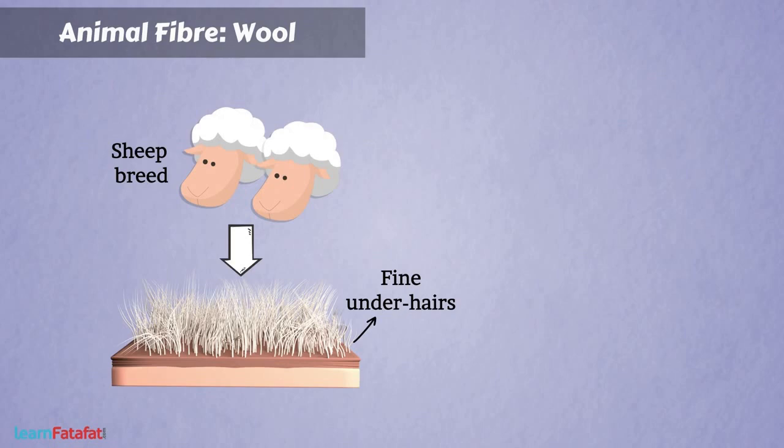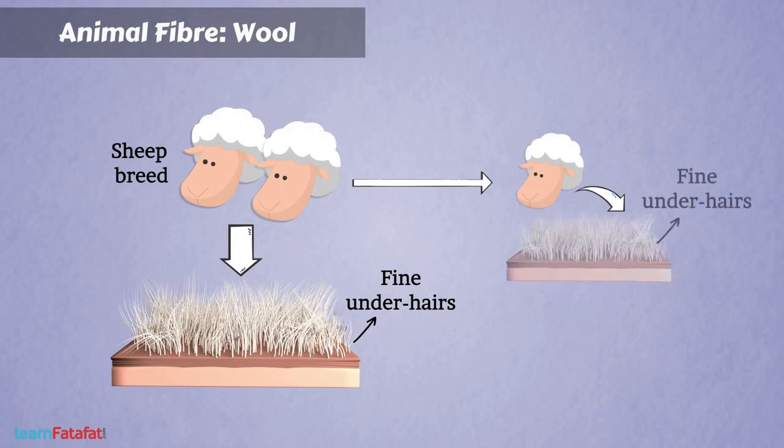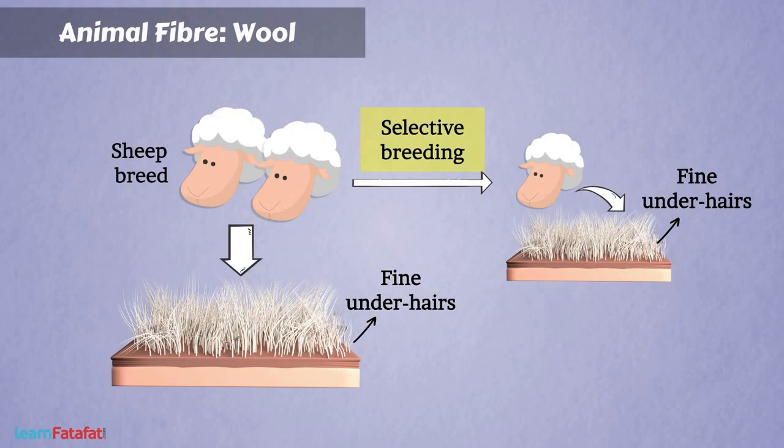If we select parents which produce only soft under-hairs, then they give birth to sheep which will also have only soft under-hairs. So it is possible to produce an organism with desired characters by selecting parents of similar characters, such as soft under-hair. This process is called selective breeding.